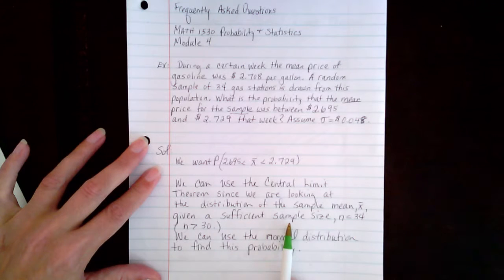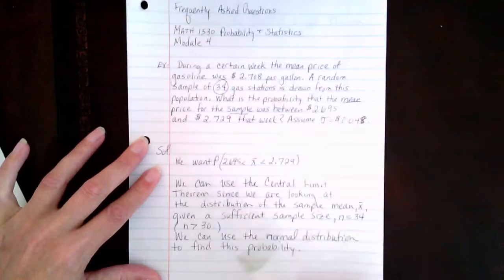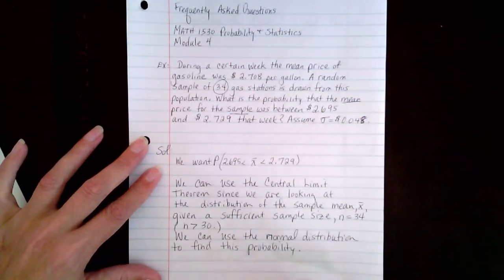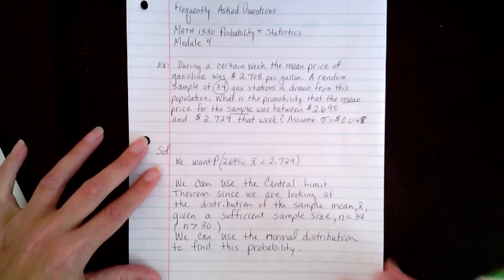Our sample size is 34, which is larger than 30. This means we can use the normal distribution to find this probability.